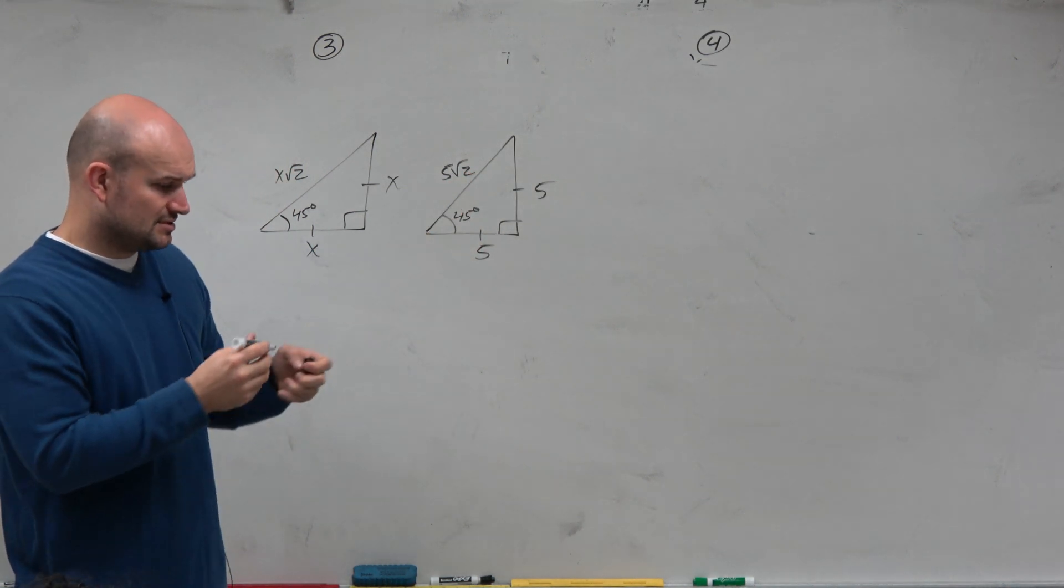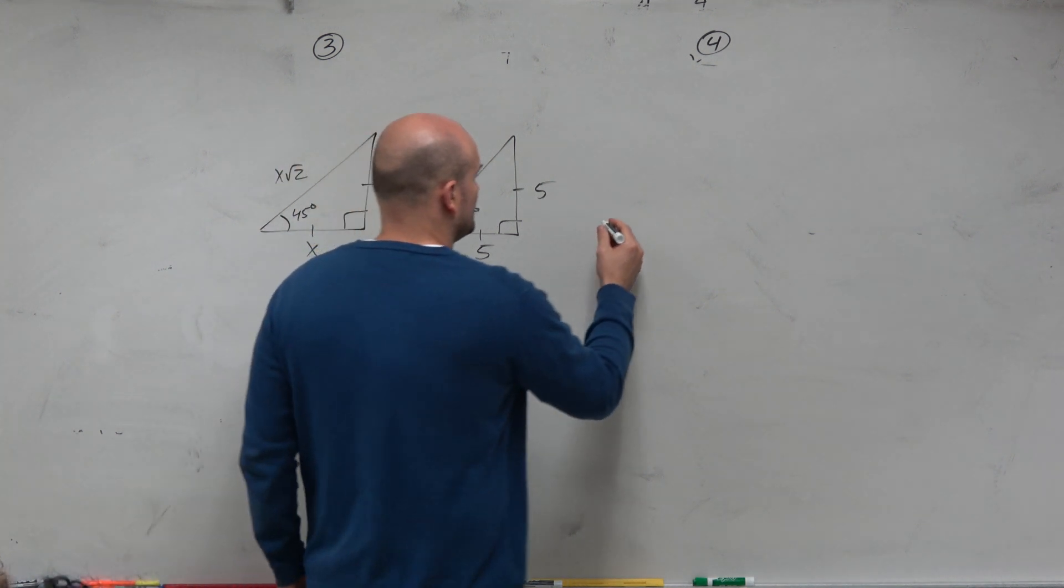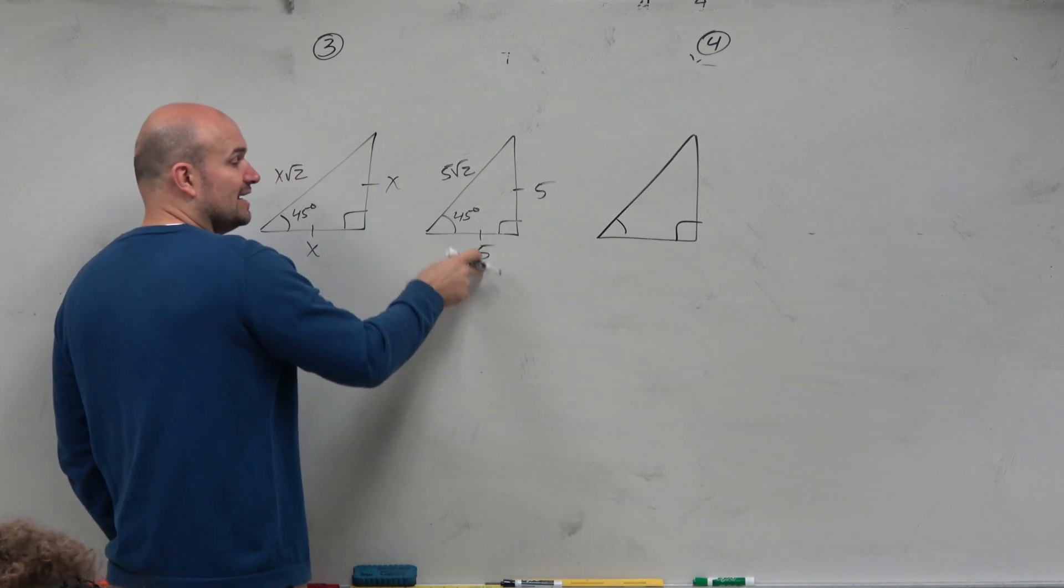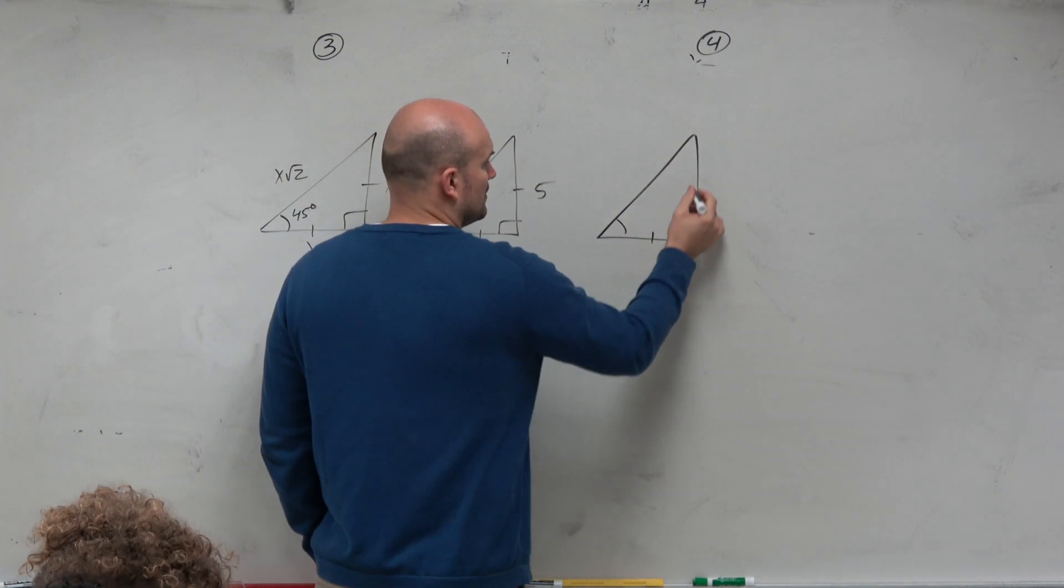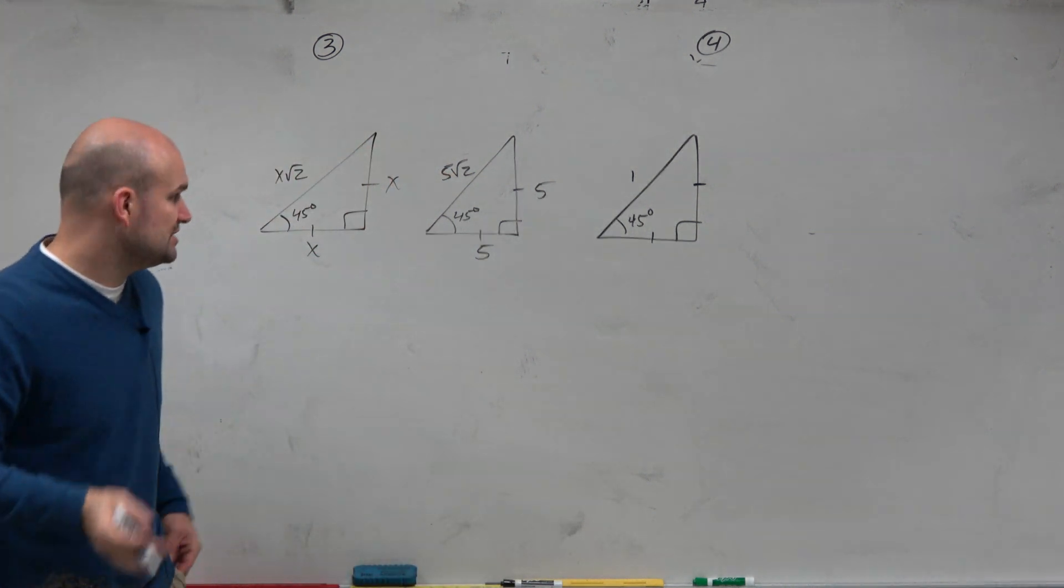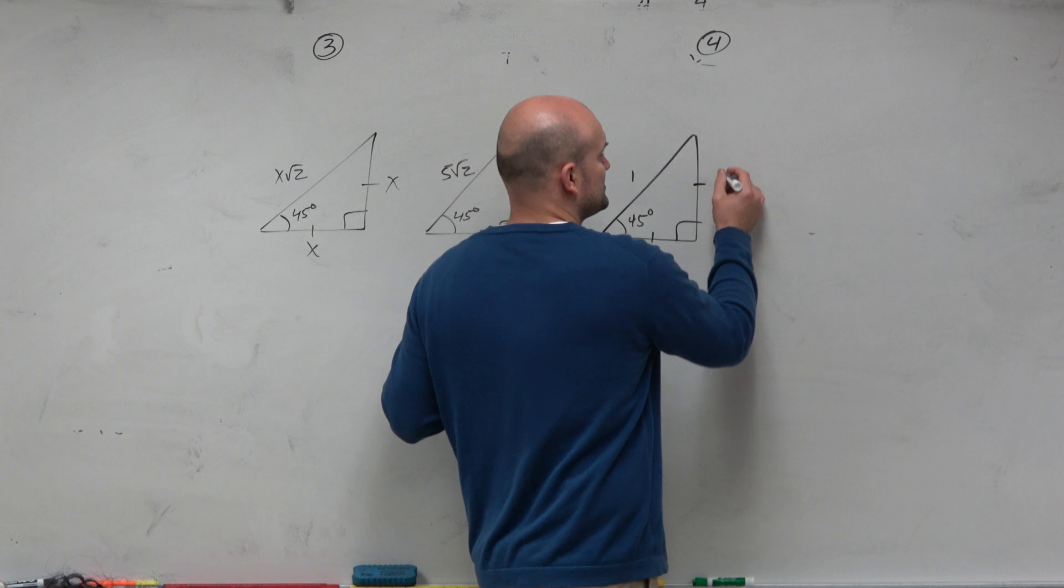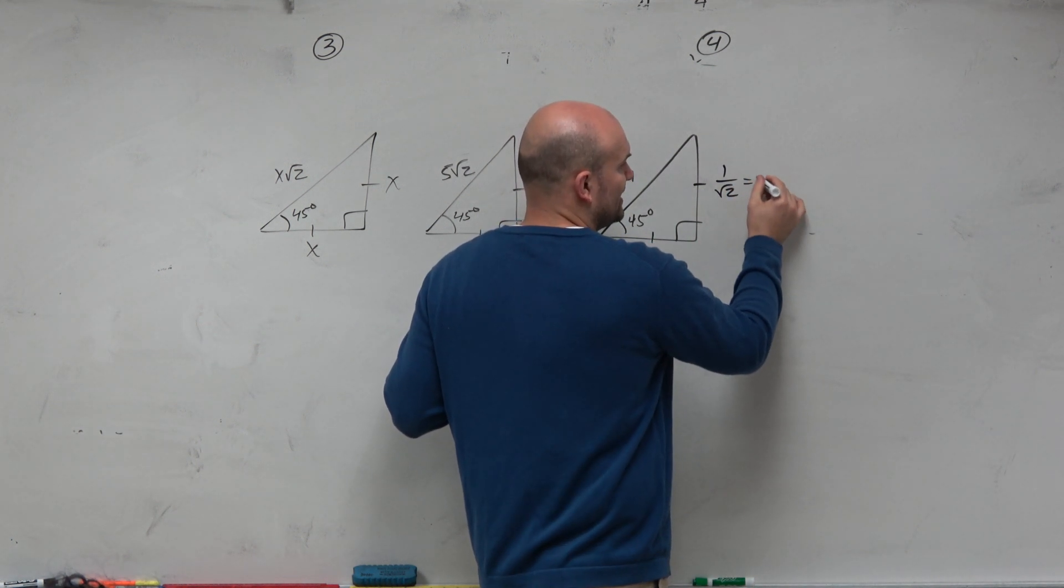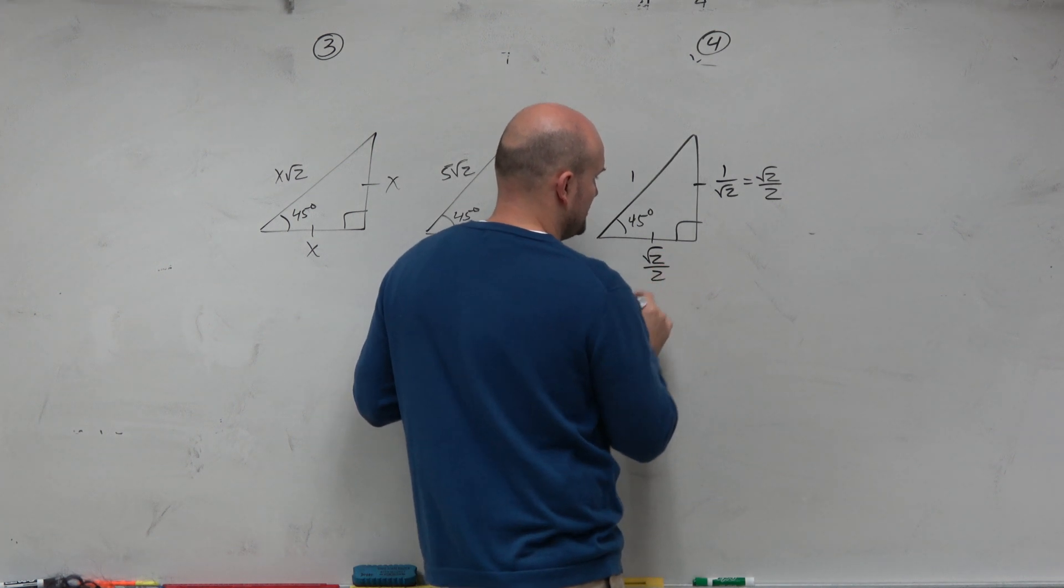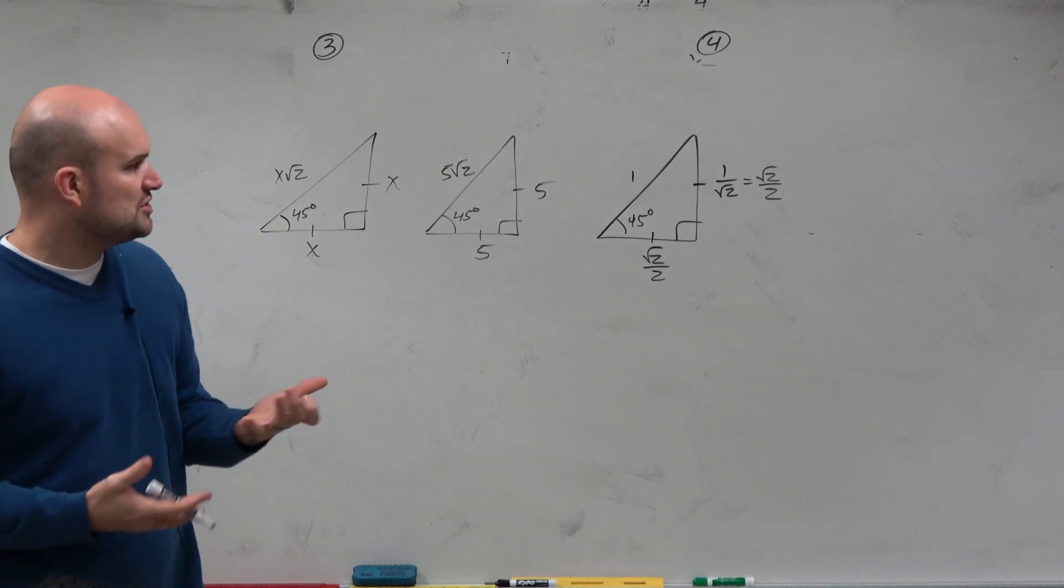That was kind of easy, right? And we took it even a step further. What about instead of giving you the leg and going to the hypotenuse, what if I gave you the hypotenuse and then you need to find the leg? To go from leg to hypotenuse, you multiply by √2. So to go from hypotenuse to leg, you divide by √2. And we got that answer to be simplified √2/2. So that one's √2/2. We looked at this and said, okay, I get it. I kind of remember it from geometry. But why is it important?